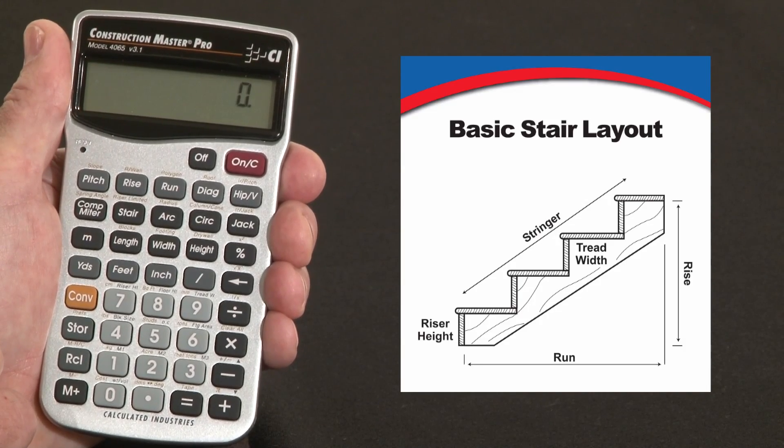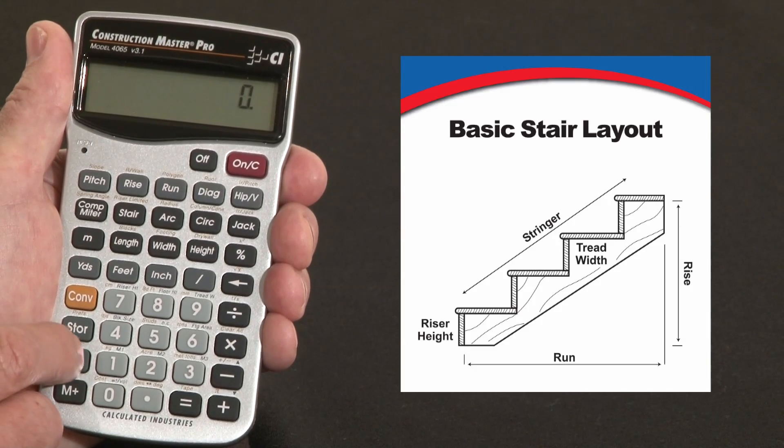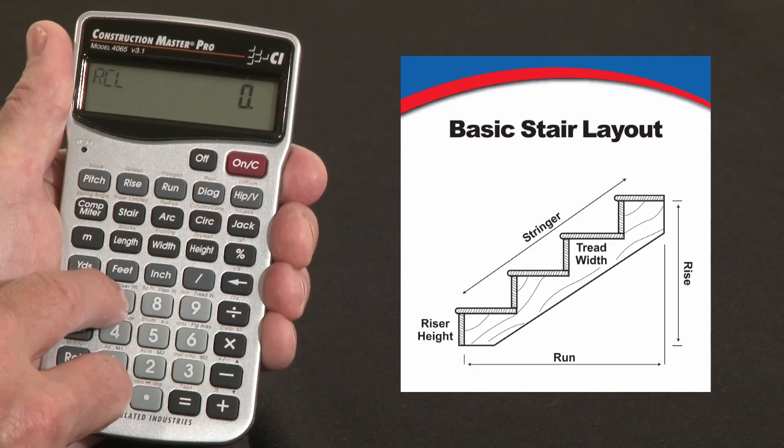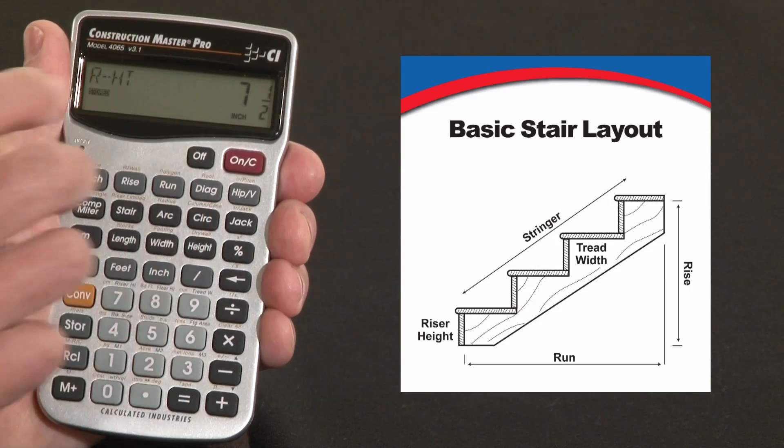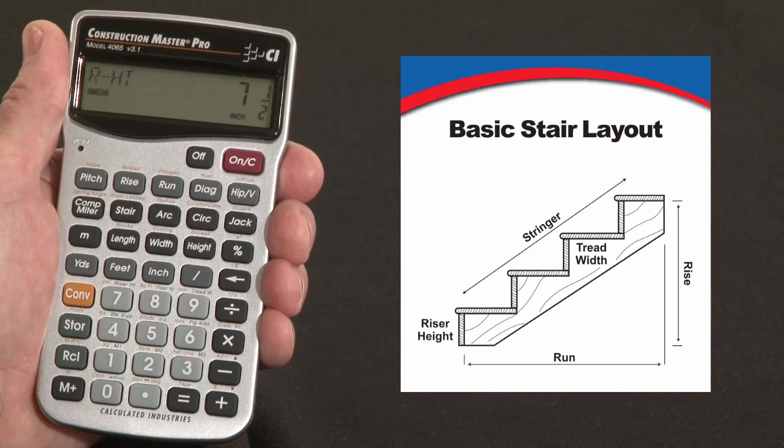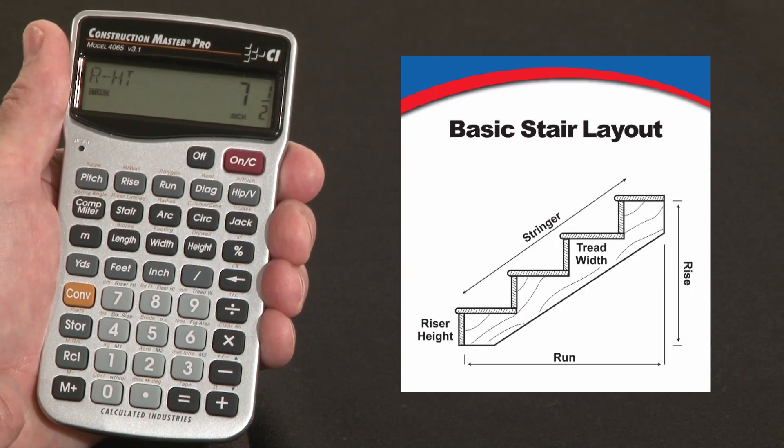First off, let me show you that the calculator is going to use a 7.5 inch target riser height as the default. If I hit recall 7 above there, it says riser height stored is 7.5 inches. That's the default of the calculator that it'll use. You can change that to something else if you like, but for this example we're going to leave that alone.